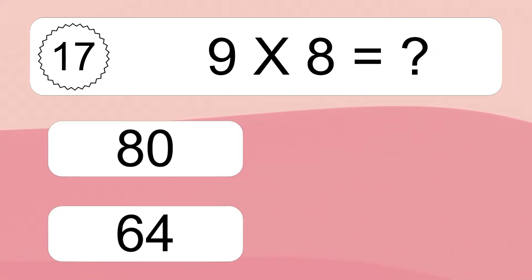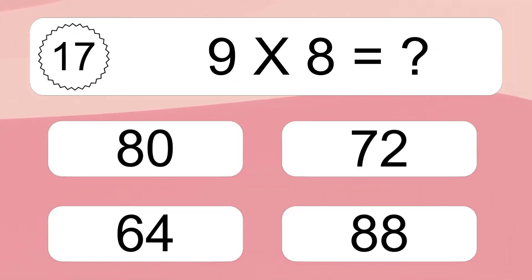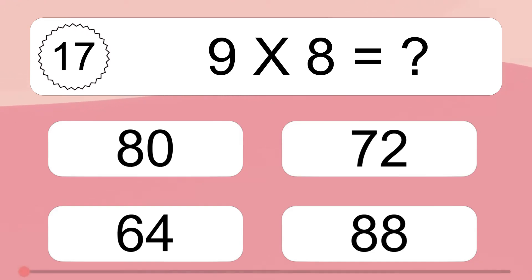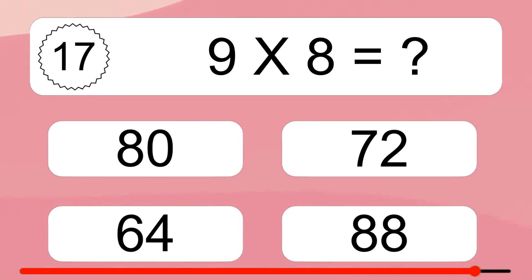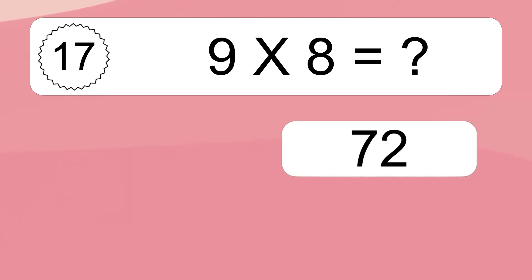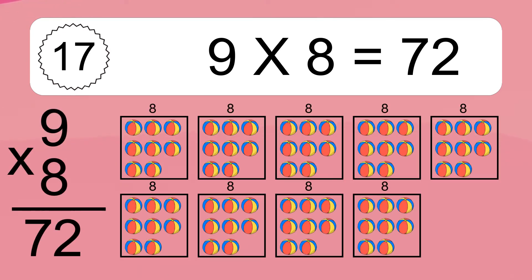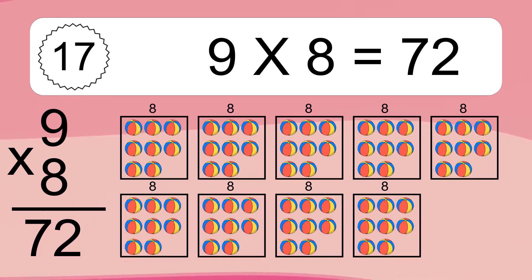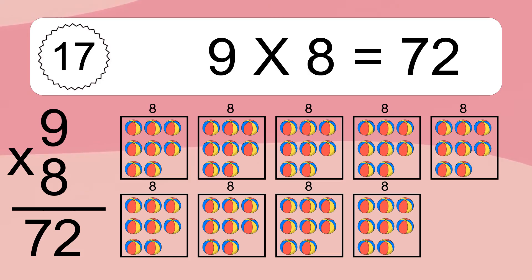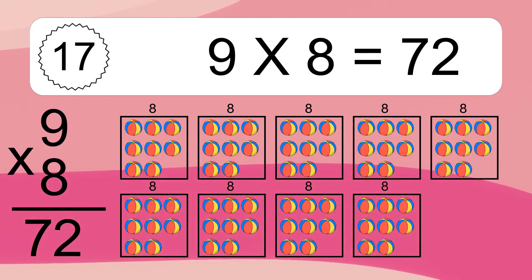9 times 8 equals what? 9 times 8 equals 72. We have 9 boxes, and each box has 8 colorful balls inside. If you count all the balls in all the boxes together, you will have 9 times 8 balls. This equals 72 balls.